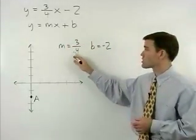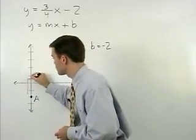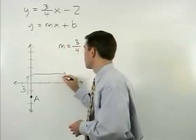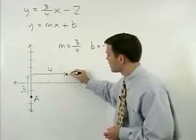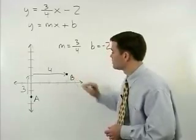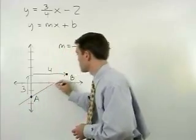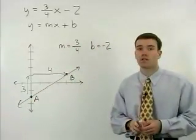From there we take our slope of 3 fourths. So our rise is 3 and our run is 4 and we end up at point B. Connect the two points and we have our line.